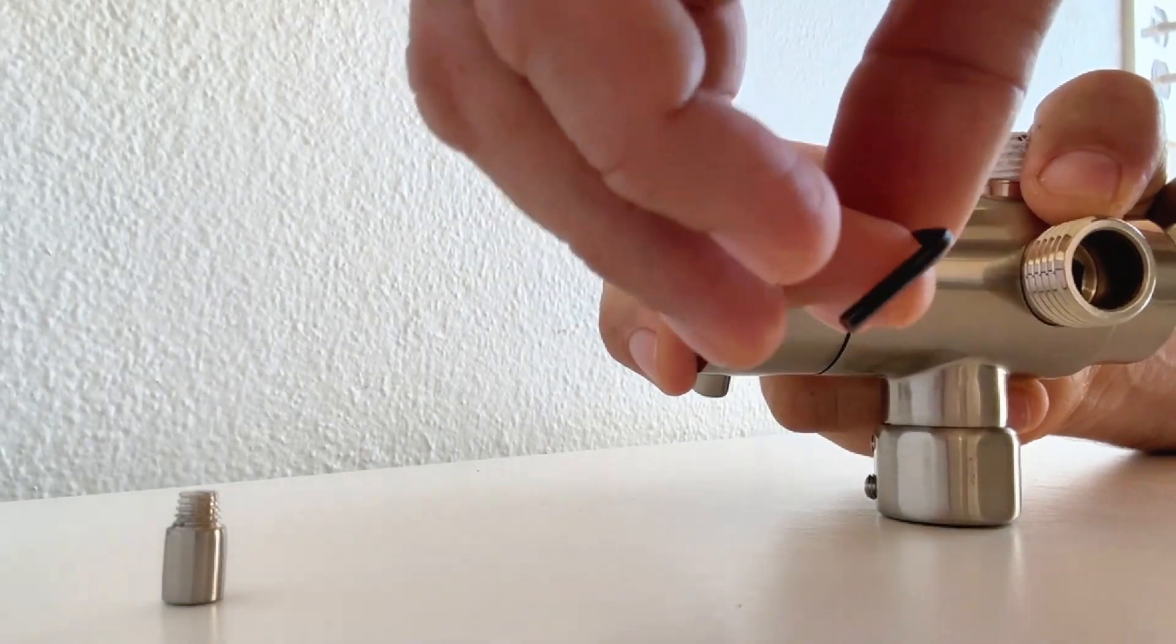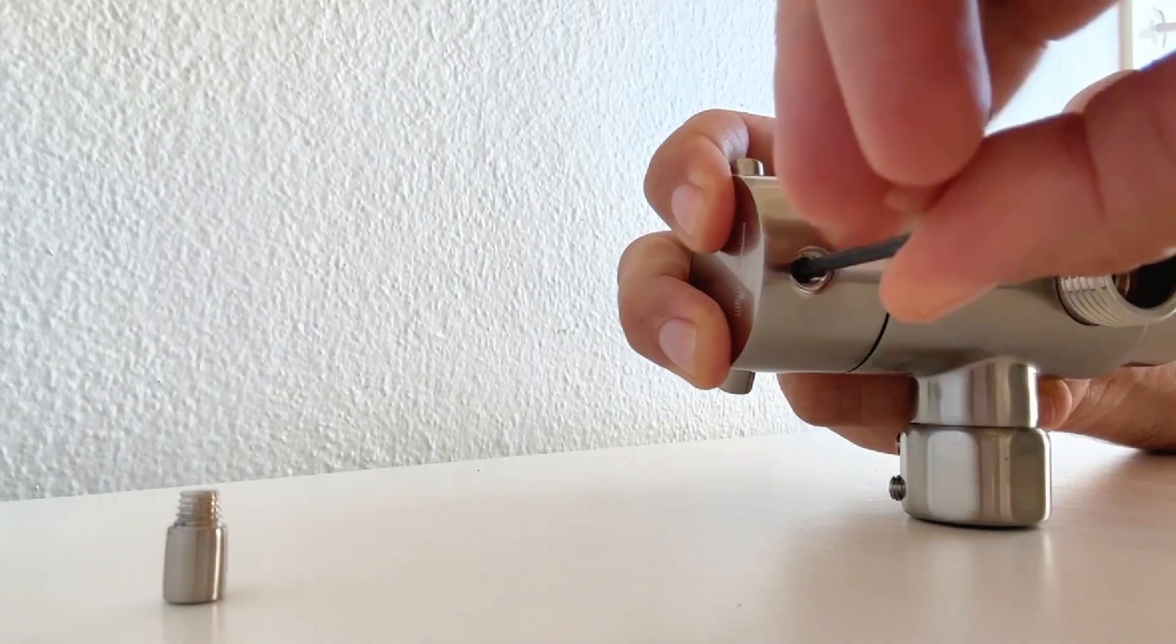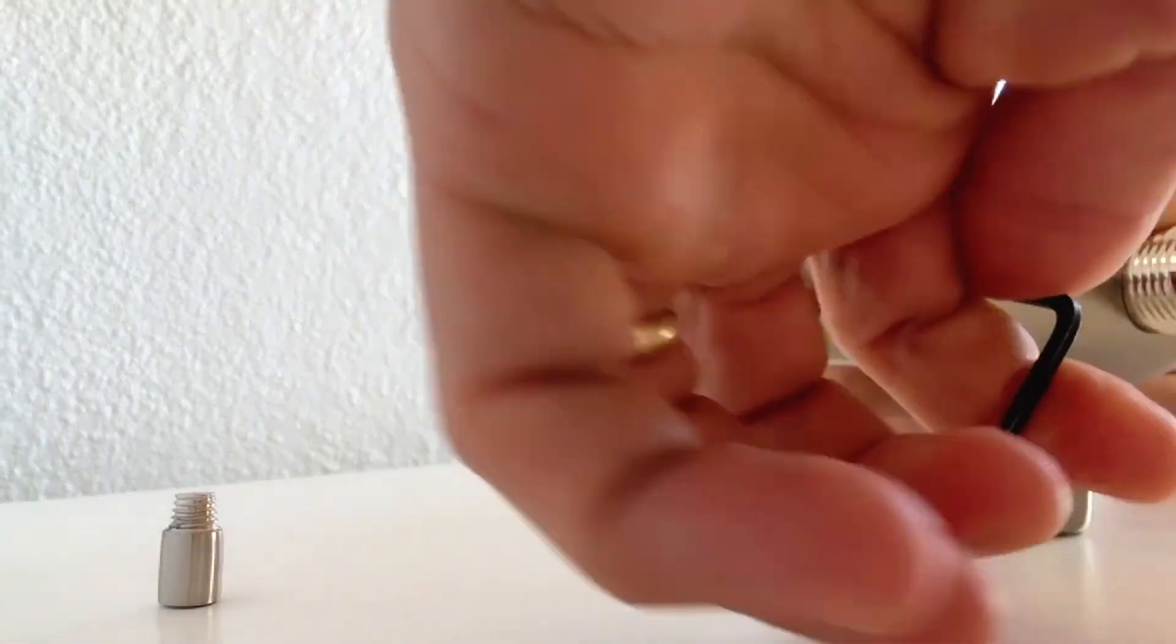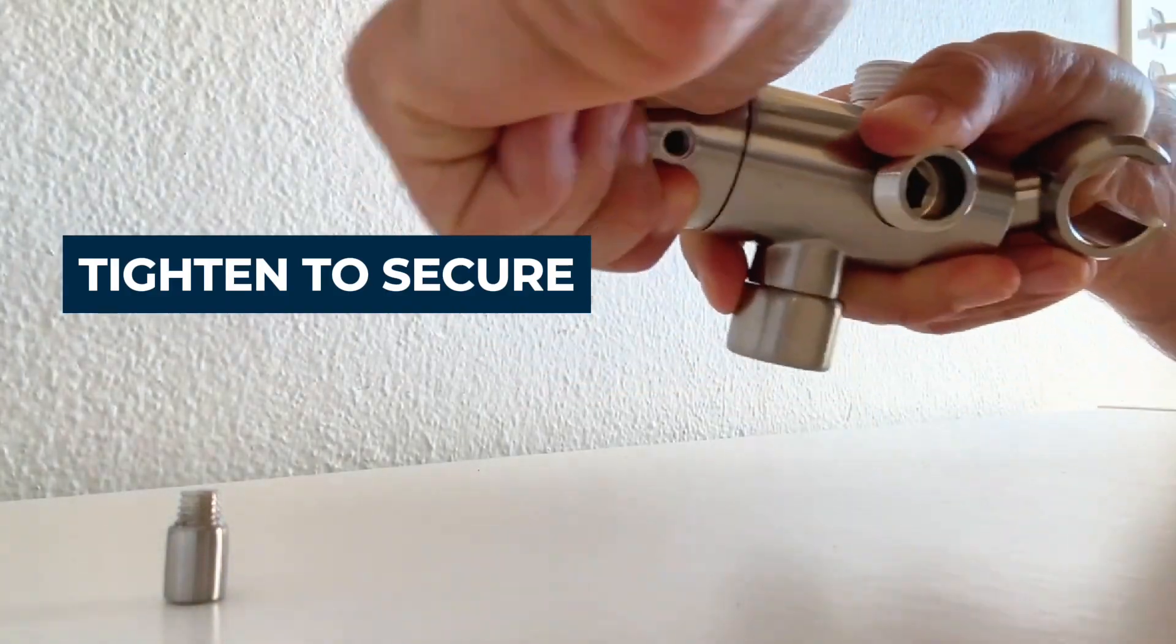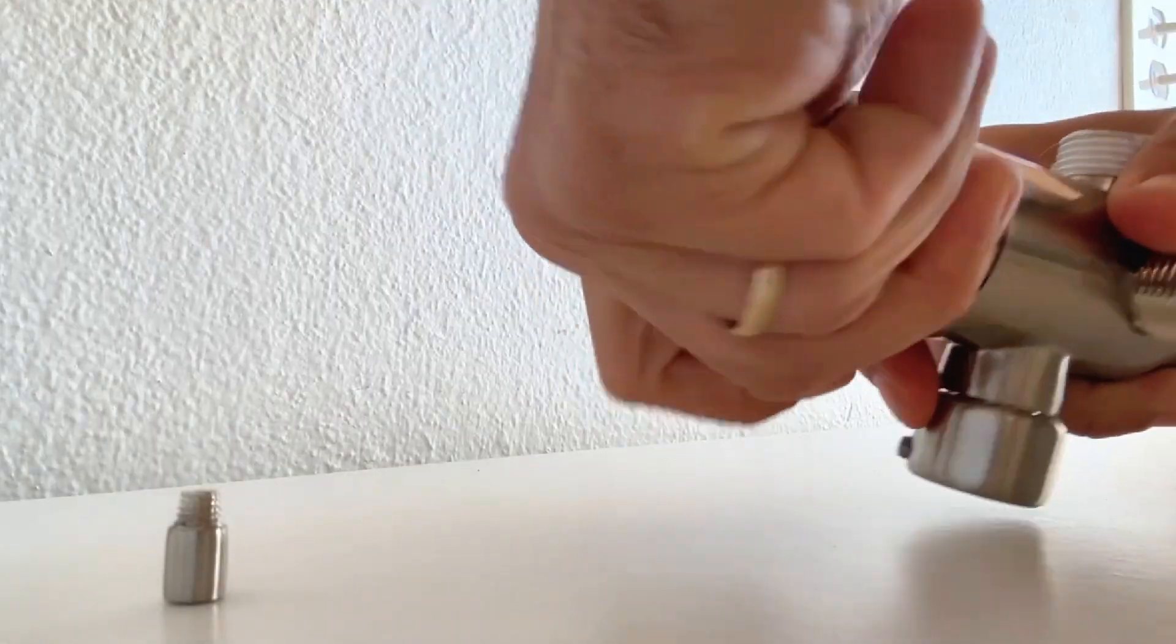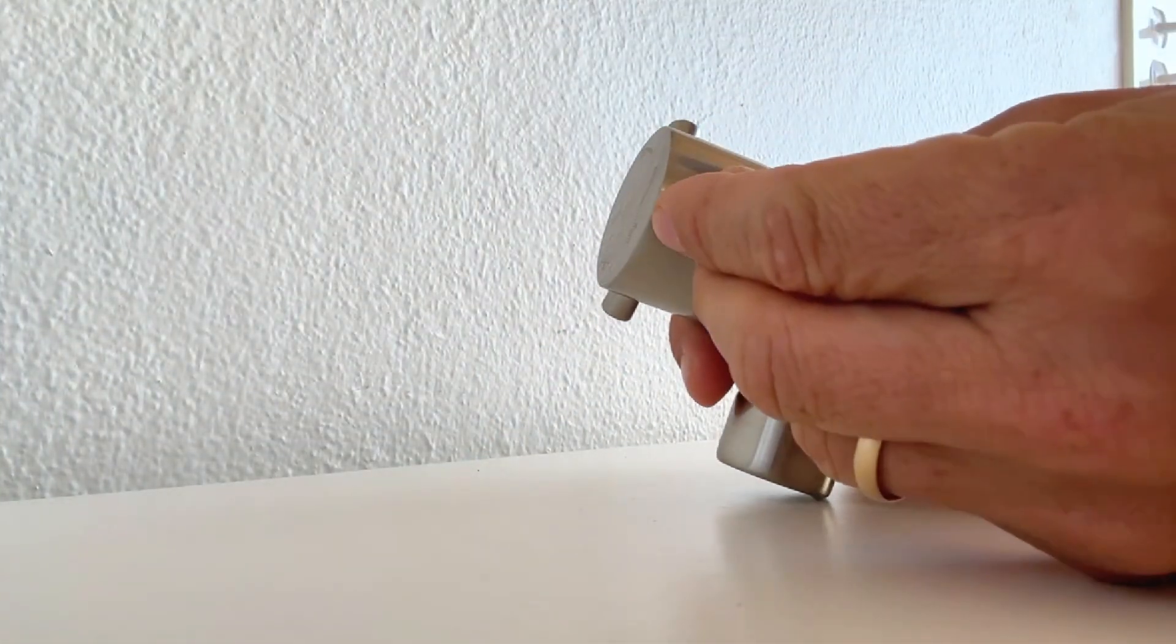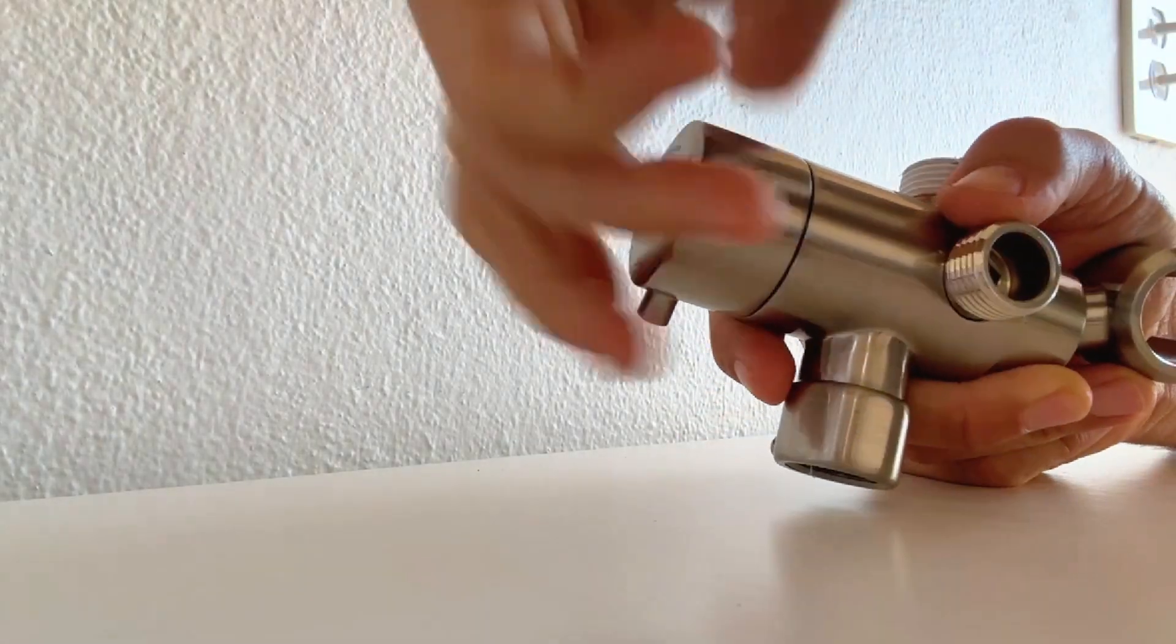Slide this in, catch the screw, and tighten that down nicely. Now you can see it's snug on there. You'll just thread on the decorative part all the way in, and there you go.